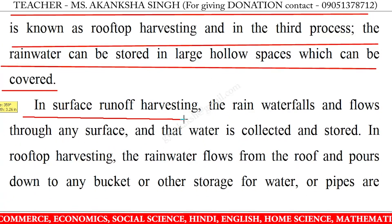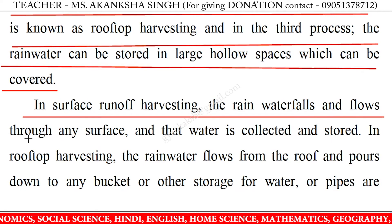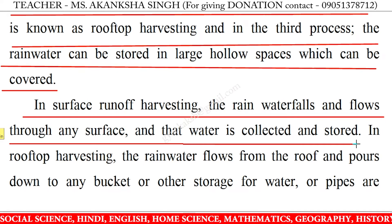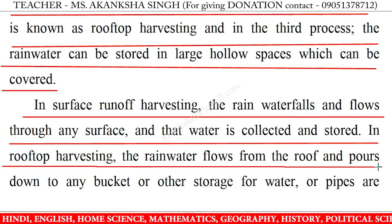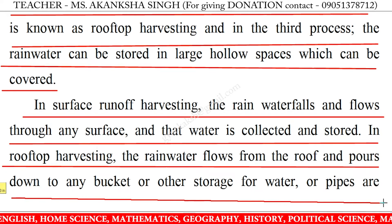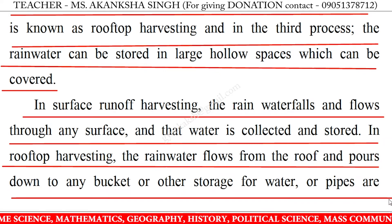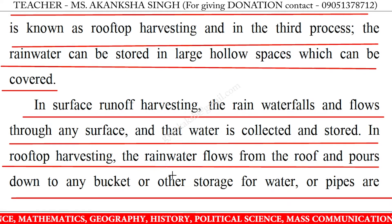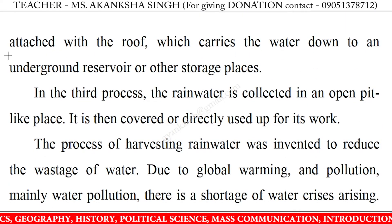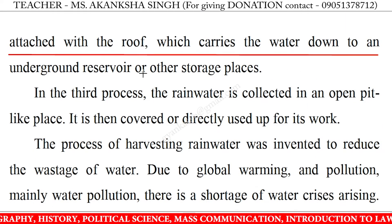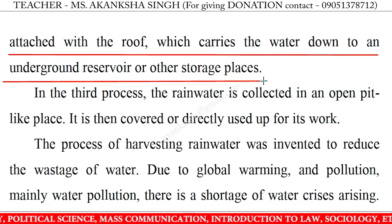In surface runoff harvesting, the rainwater falls and flows through any surface and that water is collected and stored. In rooftop harvesting, the rainwater flows from the roof and pours down to any bucket or other storage for water, or pipes are attached with the roof which carries the water down to an underground reservoir or other storage places.